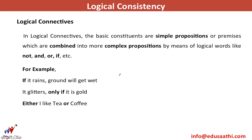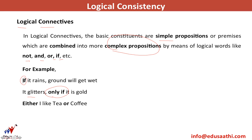The first thing we do in this lecture is define logical connectives. In logical connectives, the basic constituents are simple propositions which are combined into complex propositions by means of some logical words like 'not,' 'and,' 'or,' and 'if.' For example: if it rains, the ground will get wet; it glitters only if it is cold; either I like tea or coffee. We will take these logical connectives — if, only if, either/or — one by one.